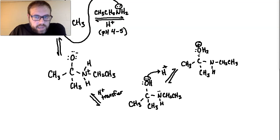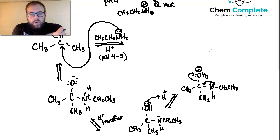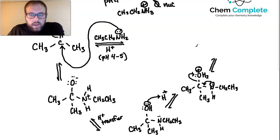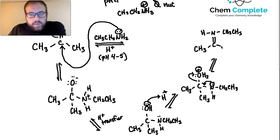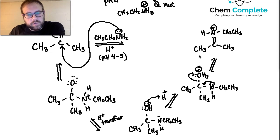Water is a very good leaving group, so it would not stick around very long. When water leaves, it would leave behind a carbocation, but we have the nitrogen with a lone pair that can donate in order to avoid the carbocation issue. The result is a double-bonded nitrogen instead of oxygen — the nitrogen still has a hydrogen and the ethyl group — giving us an iminium ion intermediate with a positive charge on nitrogen, along with H2O.